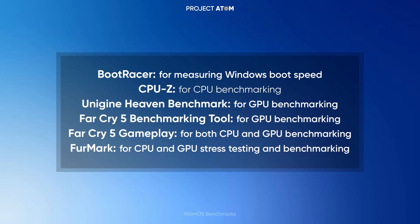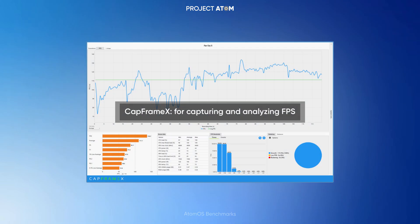CPU-Z is for CPU benchmarking. Unigine Heaven Benchmark is for GPU benchmarking. Far Cry 5 Benchmarking Tool is for GPU benchmarking. Far Cry 5 Gameplay is for both CPU and GPU benchmarking. FurMark is for CPU and GPU stress testing and benchmarking. And finally, the most important one today, Cap Frame X for capturing and analyzing FPS.